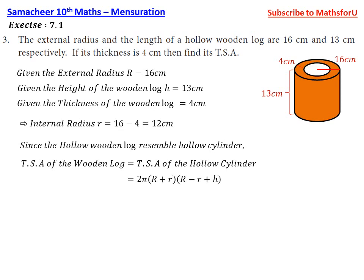Now we can substitute the values: 2 into 22 by 7, capital R is 16 and small r is 12, and then 16 minus 12 plus 13. Now 16 plus 12 will be 28, and 16 minus 12 will be 4 plus 13 is 17.